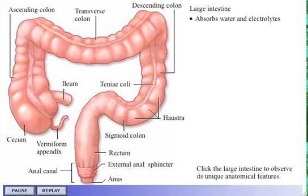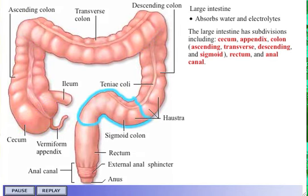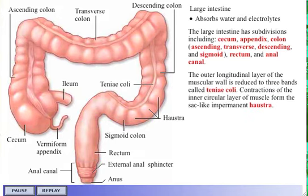The large intestine has subdivisions including the cecum, appendix, colon (including the ascending, transverse, descending, and sigmoid colon), rectum, and anal canal. The outer longitudinal layer of the muscular wall is reduced to three bands called taeniae coli. Contractions of the inner circular layer of muscle form the sac-like impermanent haustra.